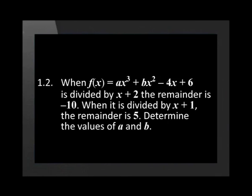Question 1.2: When f(x) = ax³ + bx² - 4x + 6 is divided by x + 2, the remainder is -10. When it is divided by x + 1, the remainder is 5. Determine the values of a and b.